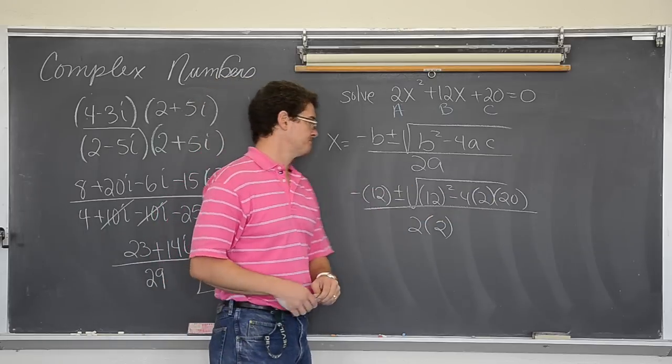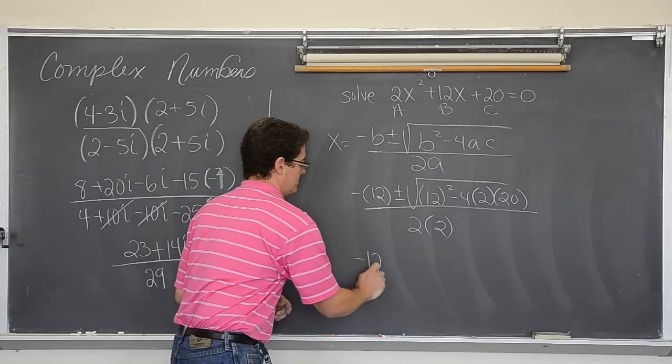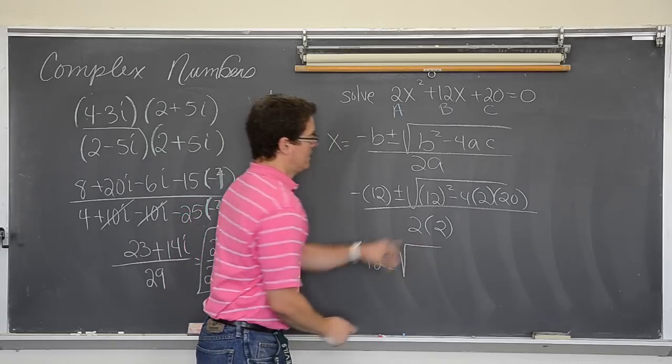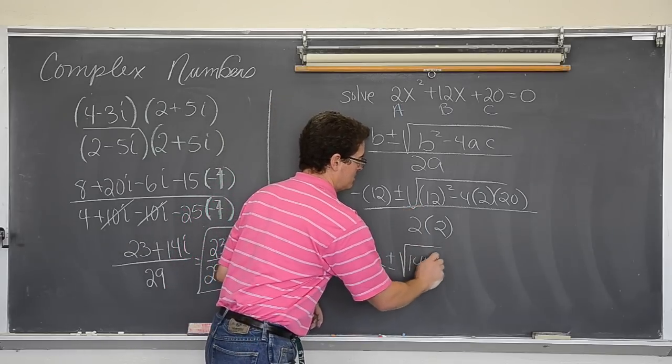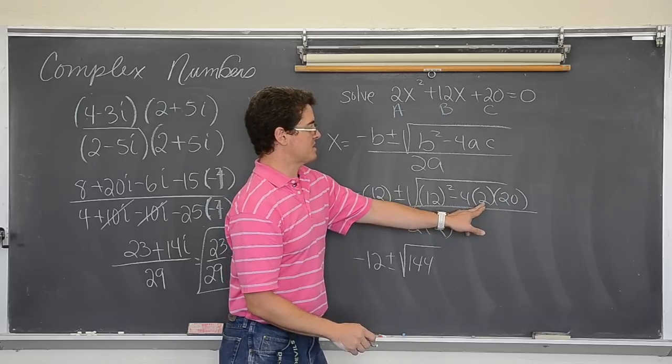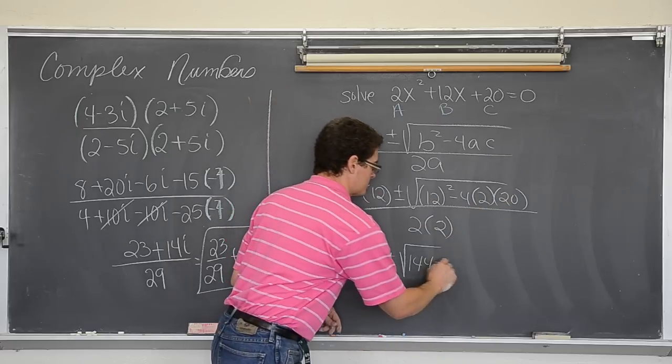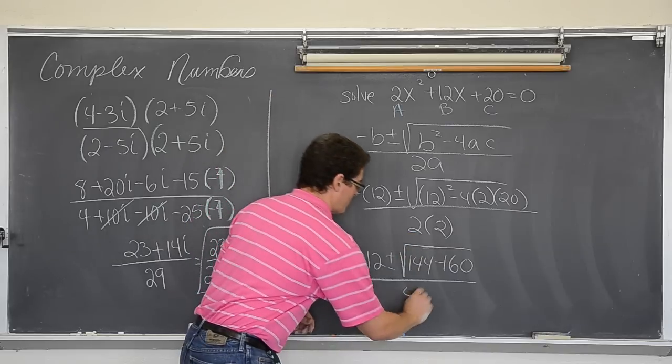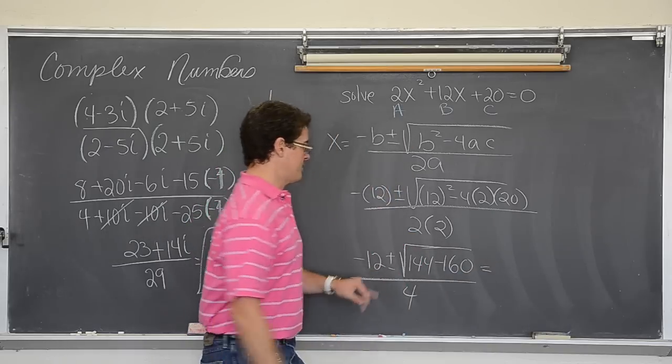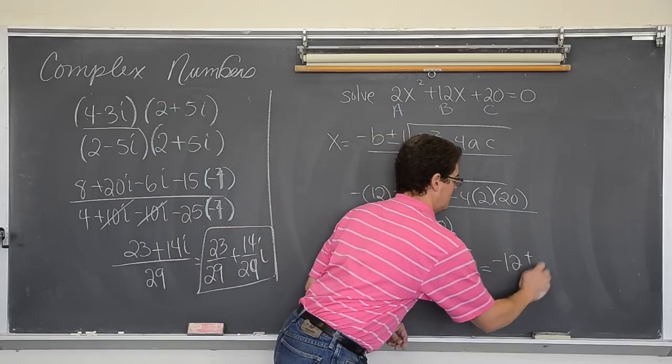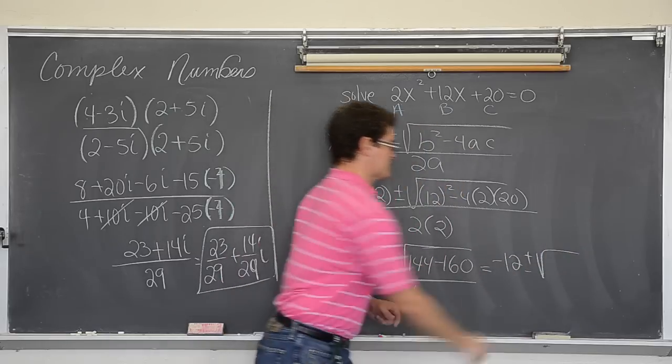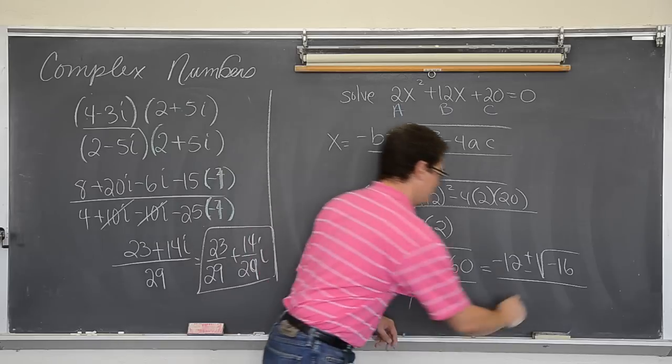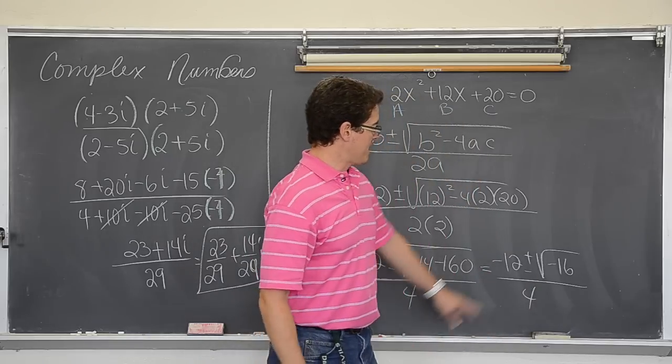You want to be careful of your signs of course and make sure your answers are right. Parenthesis will help that happen. So we have negative 12 plus or minus the square root. This is 144. This 4 times 2 is 8. 8 times 20 is 160. Over 2 times 2 which is 4. This comes out to be negative 12 times the square root of negative 16. All over 4.